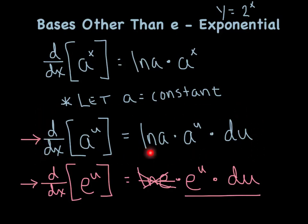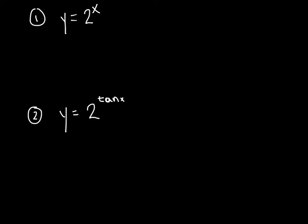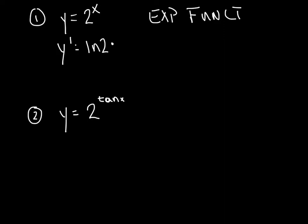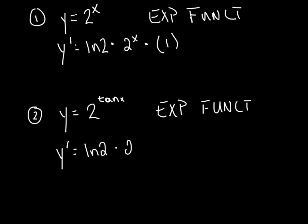Let's look at a couple of examples and practice. With a lot of these derivatives, the most important thing is being able to recognize what type of function it is. When you look at example 1, do you instantly see that it's an exponential function because the base is a constant and the exponent is a variable? The base is not e, so we use the new rule: natural log of the base times the original function times the derivative of the exponent, which in this case is just 1. For the second problem, same key — identify it as an exponential function, then apply the rule: natural log of the base times the original function times the derivative of the exponent with respect to x.